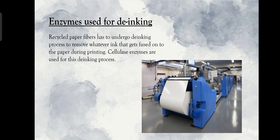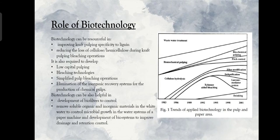Enzymes are also used for de-inking. Recycled paper fibers have to undergo a de-inking process to remove whatever ink gets fused onto the paper during printing. Cellulase enzymes are used for this de-inking process.